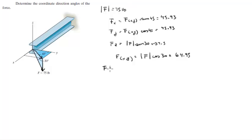So the Cartesian vector form of F is 45.93I plus 45.93J minus 37.5K.